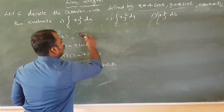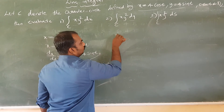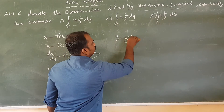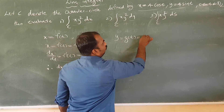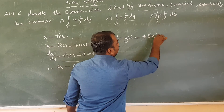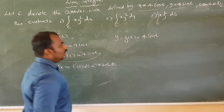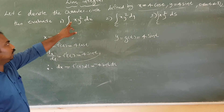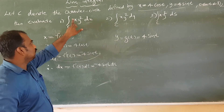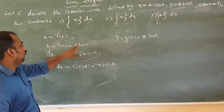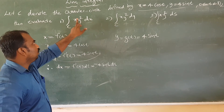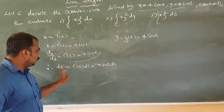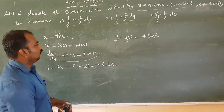So y is equal to g(t). g(t) equals 4 sin t. Now x equals F(t), y equals 4 sin t, and dx equals minus 4 sin t dt — that's absolutely right.